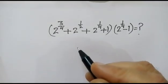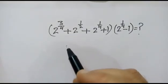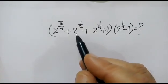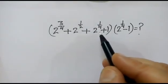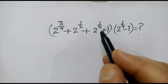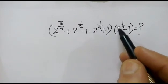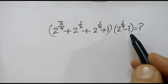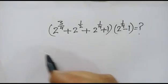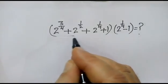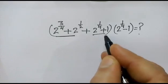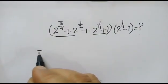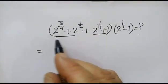Hi friends, we have to find out the solution of this problem: 2 to the power 3 by 4, plus 2 to the power 1 by 2, plus 2 to the power 1 by 4, plus 1, multiplied by 2 to the power 1 by 4 minus 1.